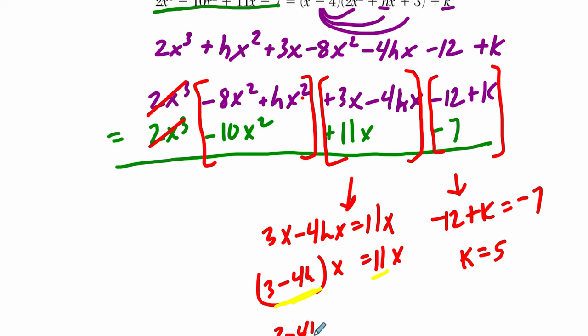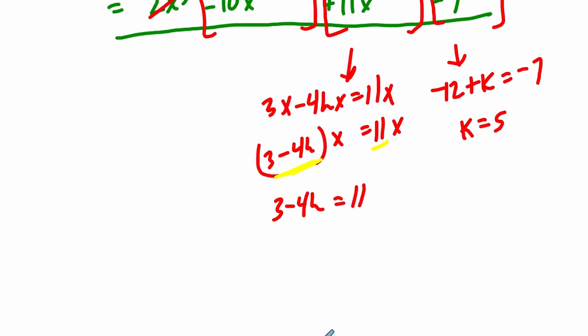In other words, 3 minus 4h has to equal 11, and if we solve for h there, we can subtract 3 on both sides. 11 minus 3 is 8, divide by negative 4 on both sides, h is negative 2. We've solved for h and k.